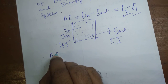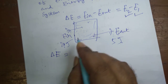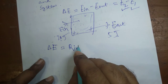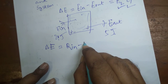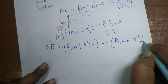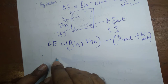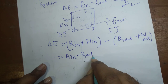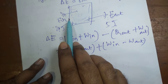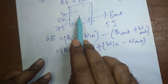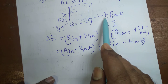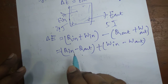We can elaborate this: energy entering the system is Q_in plus W_in, and energy leaving is Q_out plus W_out, so delta E equals Q_in minus Q_out plus W_in minus W_out. This is for a closed system. In an open system, some mass interaction will also take place — mass entering or leaving carries energy with it — and that will be discussed in the steady flow energy equation.